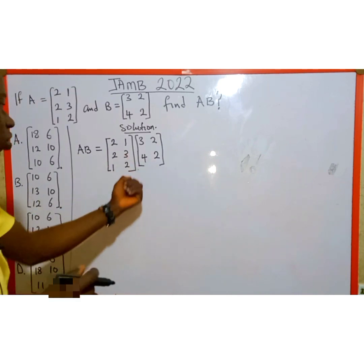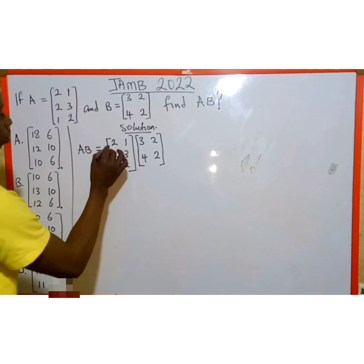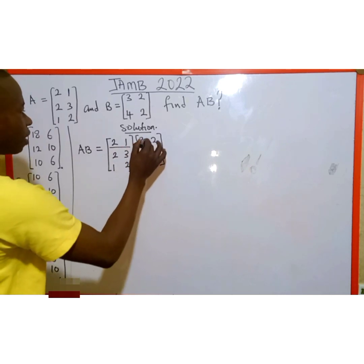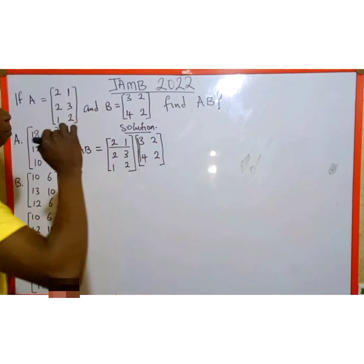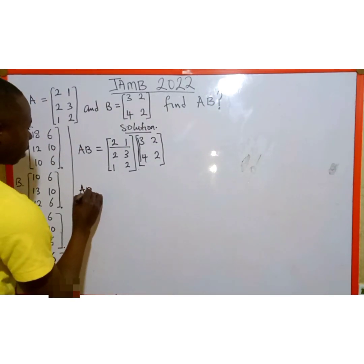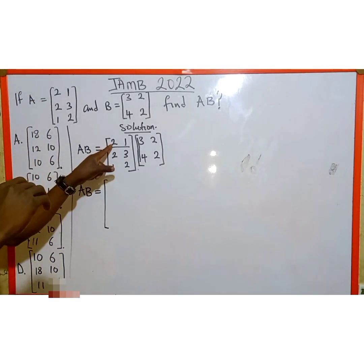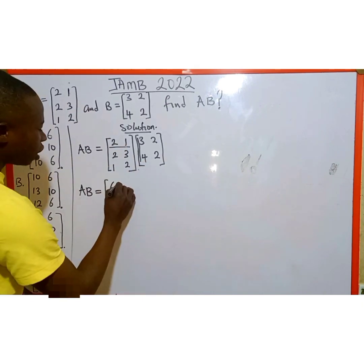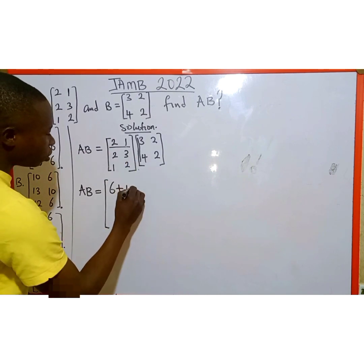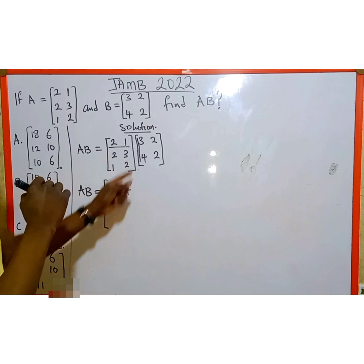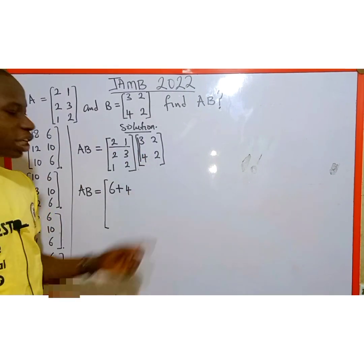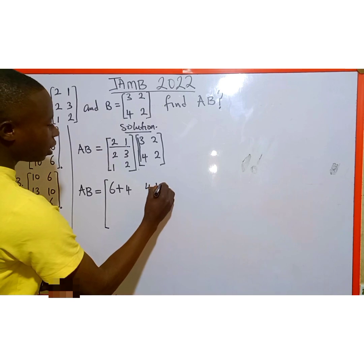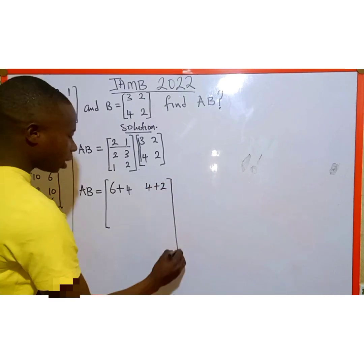So how are we going to multiply these two matrices together? We are going to use the element in the first row of matrix A multiplied by the element in the first column of matrix B to get our first term. So AB will be equal to: 2 multiplied by 3 gives 6, then plus 1 multiplied by 4 gives 4. That is the first element. Then using the second column: 2 multiplied by 2 gives 4, then plus 1 multiplied by 2 gives 2.